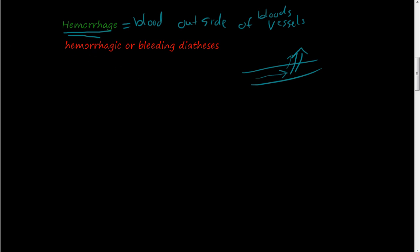There is a group of disorders called the hemorrhagic or bleeding diathesis. And these hemorrhagic diathesis or these bleeding diathesis are problems or a high tendency for this to happen, for hemorrhages. So it's a higher tendency for bleeding to happen.